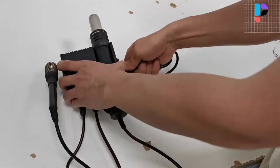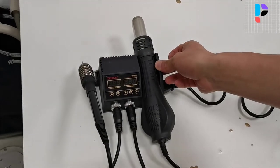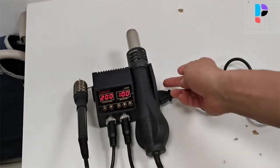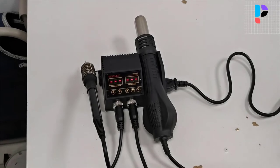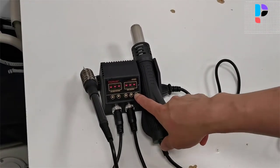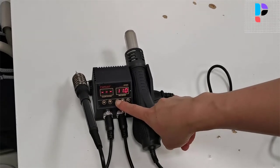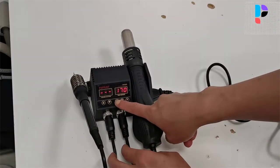You can use hot air gun and soldering iron separately, with no interference with each other. Because of the handle with sensor switch, the system can quickly access operating mode while gripping handle. Meanwhile, the system will transfer to stand-by mode while handle released.